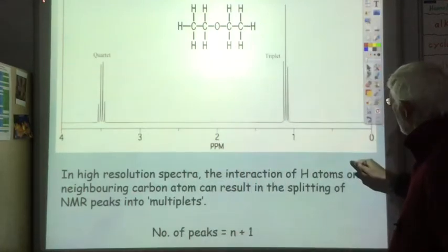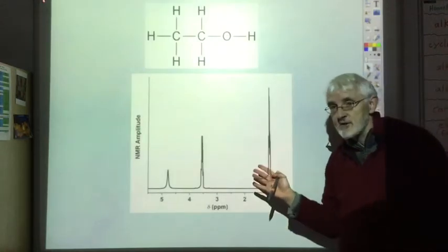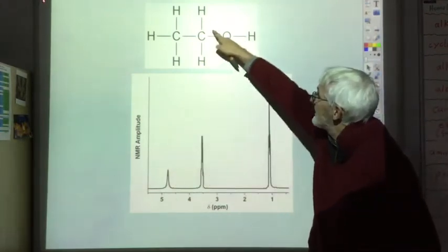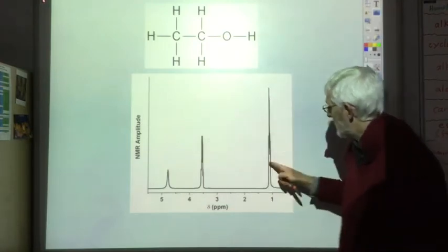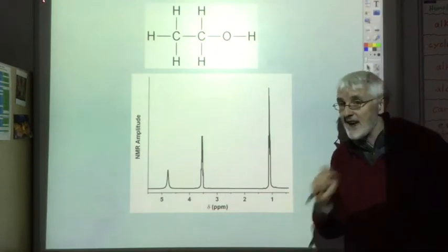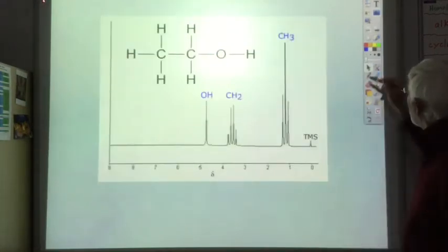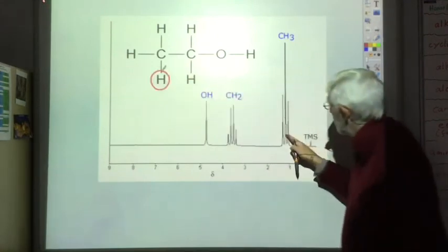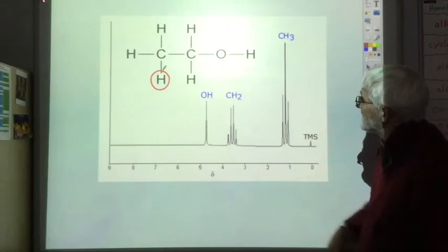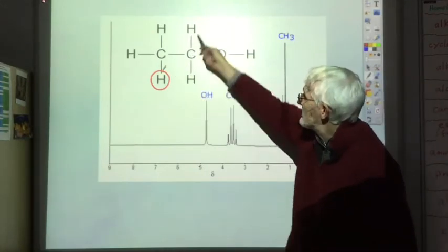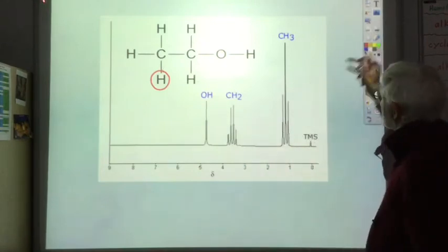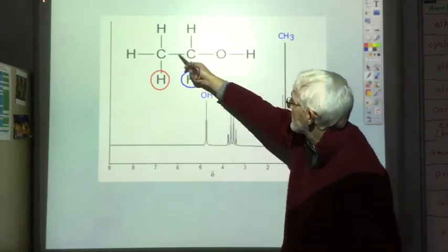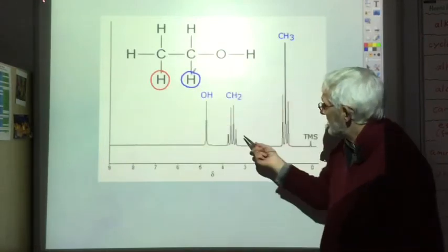Let's look at another example. Here's the low-resolution spectra of ethanol: this hydrogen is responsible for this peak, these two hydrogens are responsible for this peak, and these three are responsible for this peak. In the high-resolution spectra, these three hydrogens give a triplet, because the neighbouring carbon atom has got two hydrogens. The CH2 peak: the neighbouring carbon atom has got one, two, three hydrogens, so it gets split into a quartet.